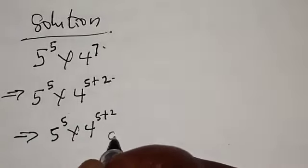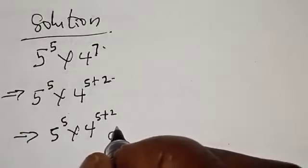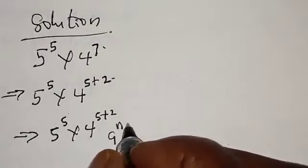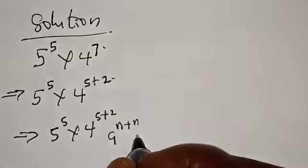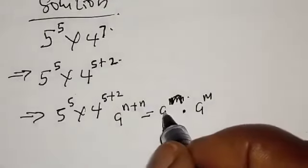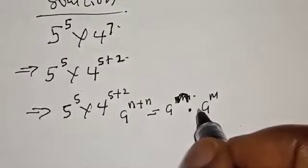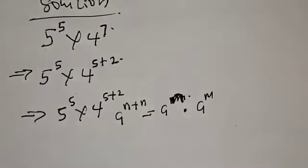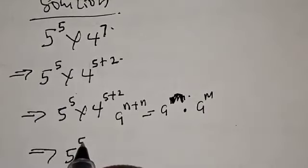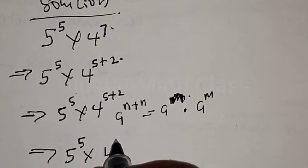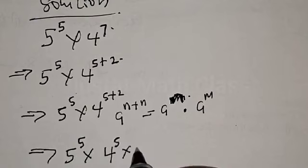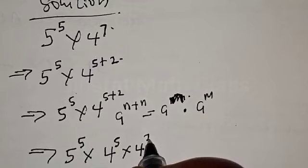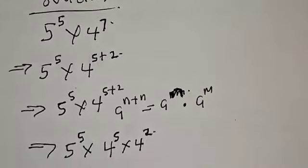Now, if you have a raised to power m plus n, it is equal to a raised to power m multiplied by a raised to power n. This implies that we have 5 raised to power 5 multiplied by 4 raised to power 5, multiplied by 4 raised to power 2.